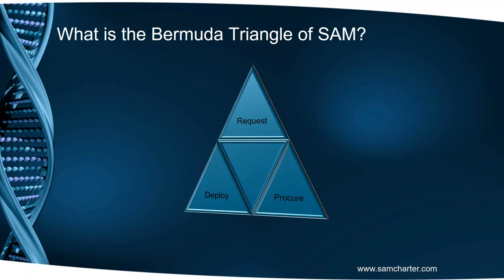Let's follow this scenario to its conclusion. Six months down the line, the service is stood up, the business is making a lot of money, and a software vendor calls. The project manager has rolled onto a new project. Procurement can't remember what they bought six months ago, and deployment are in the same situation. There's a lot of scurrying around. Because there's no cohesion, a lot of money is wasted, software is over-deployed or misdeployed, and architecturally it may not be assessed at deployment. This creates the perfect storm for a software vendor audit — hence the Bermuda Triangle of SAM.